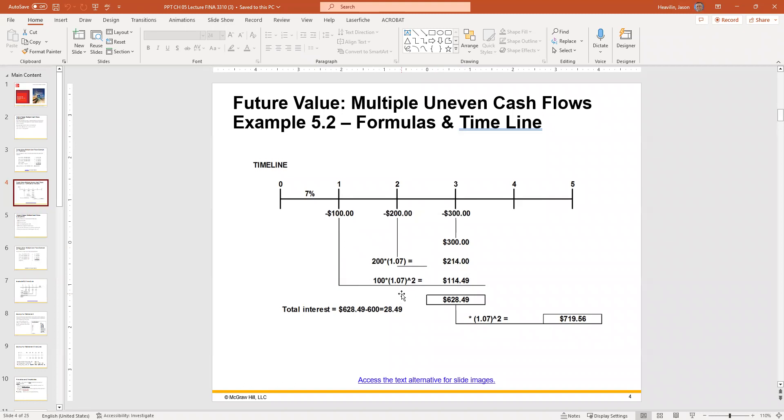So we take the 100, 7%, 1 plus 7% is 1.07, two periods. That's exponent. Now, I have 114.49. If I take the 200 and apply the same thing, three minus two is one. So you can imagine a one is an exponent, but it's not necessary to write it. So you take the 200 times 1 plus 7%, 1.07, and it grows to 214. Now the 300, we don't do anything with it because it's on the same period. It doesn't grow. So when you add them together, we have 628.49. That will be for year three.